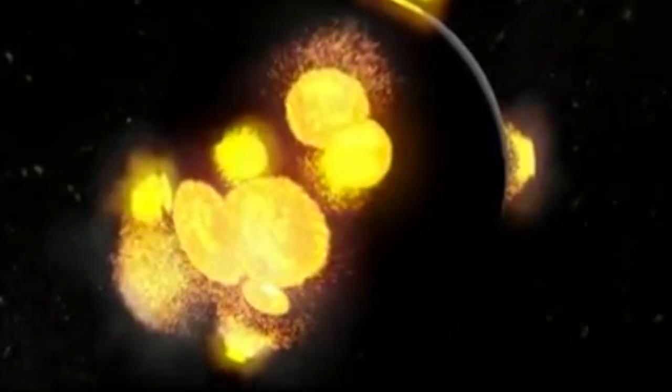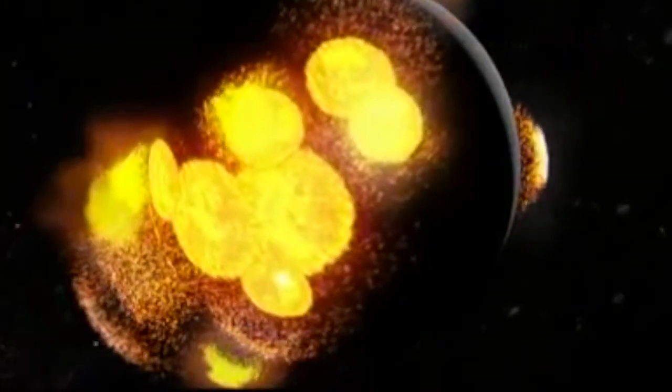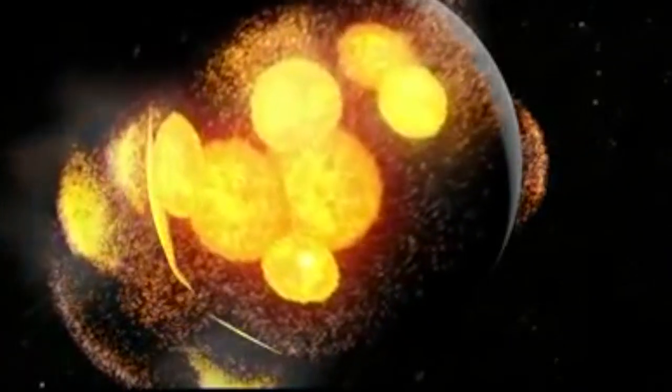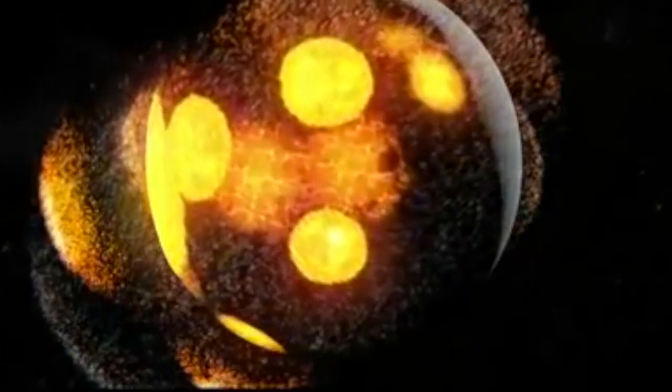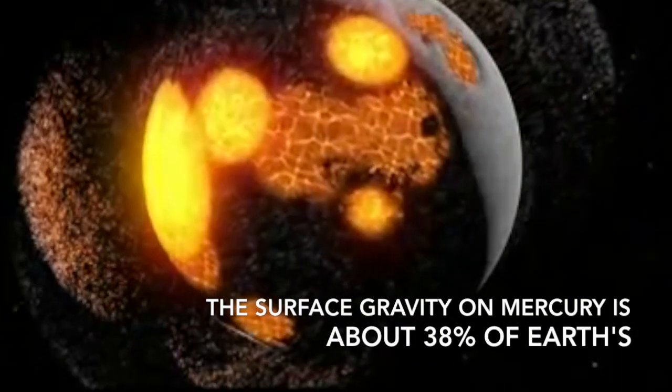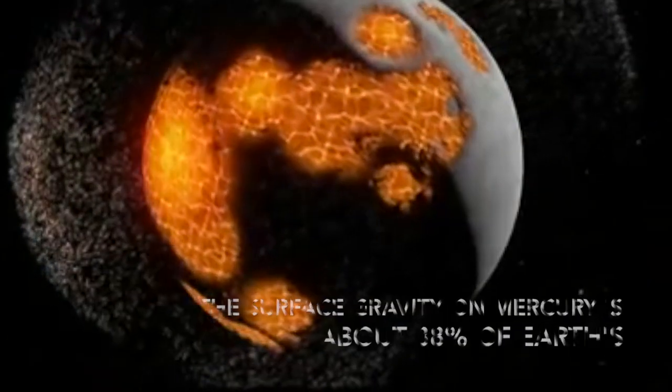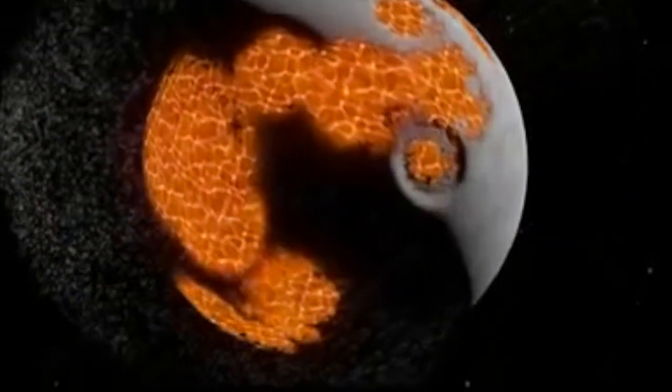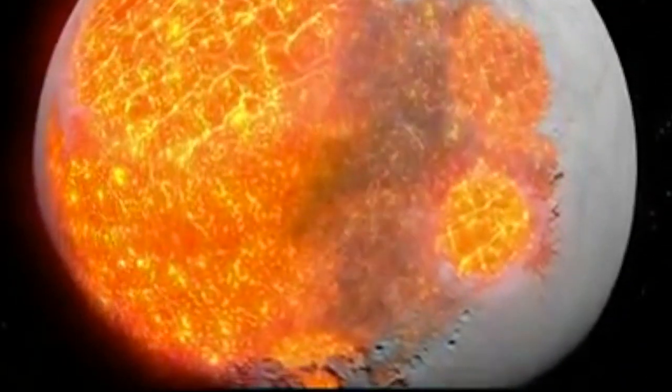The gravity on Mercury is not very strong. This is because it's a small planet. The surface gravity on Mercury is only about 38% of the surface gravity on Earth. Meaning that if you weigh 100 pounds on Earth, you would weigh only 38 pounds on Mercury.